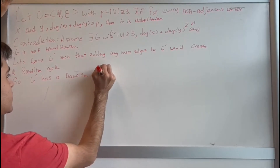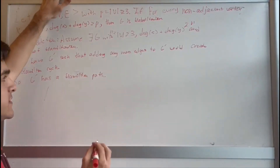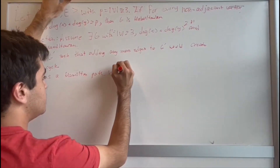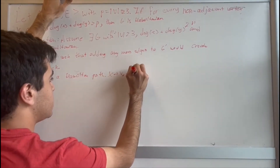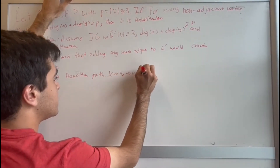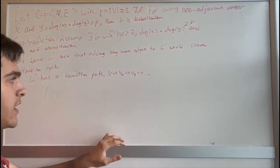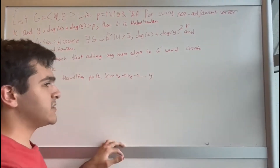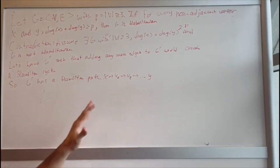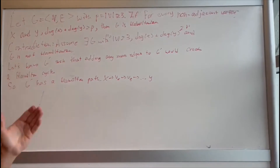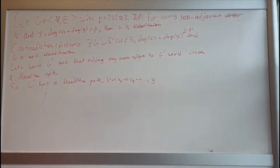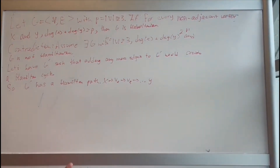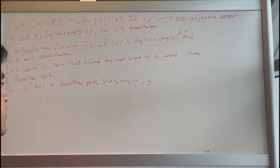We can write out this Hamiltonian path explicitly. It starts at vertex x, then goes to v2, v3, and keeps going through all vertices, eventually arriving at y, which is the final vertex of the Hamiltonian path. That's what g prime has.